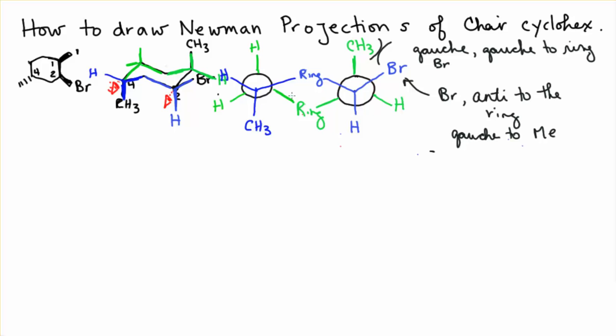So there is our Newman projection of this particular chair cyclohexane. If we look at the substituents, this methyl group here is 180 degrees from this methyl group here.